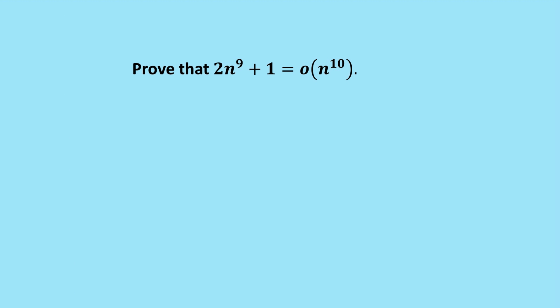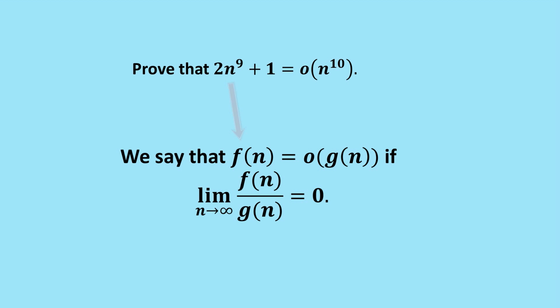So let's do our first problem. We want to prove what we've got there. Let's think of the left-hand side, 2n^9 + 1, as f(n), and n^10 as g(n).